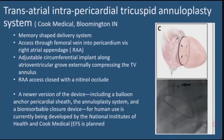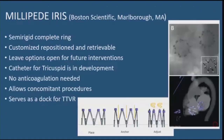Another annuloplasty system still in development involves going through a right atrial appendage access to externally place an annuloplasty system around the tricuspid valve, then closing the hole — the NIH is still developing this in humans. The Millipede IRIS is a complete semi-rigid ring designed by a surgeon, based on the principle that more rigid rings provide more durable repair. It has only been surgically implanted in two patients and is being developed by Boston Scientific for the tricuspid valve space.